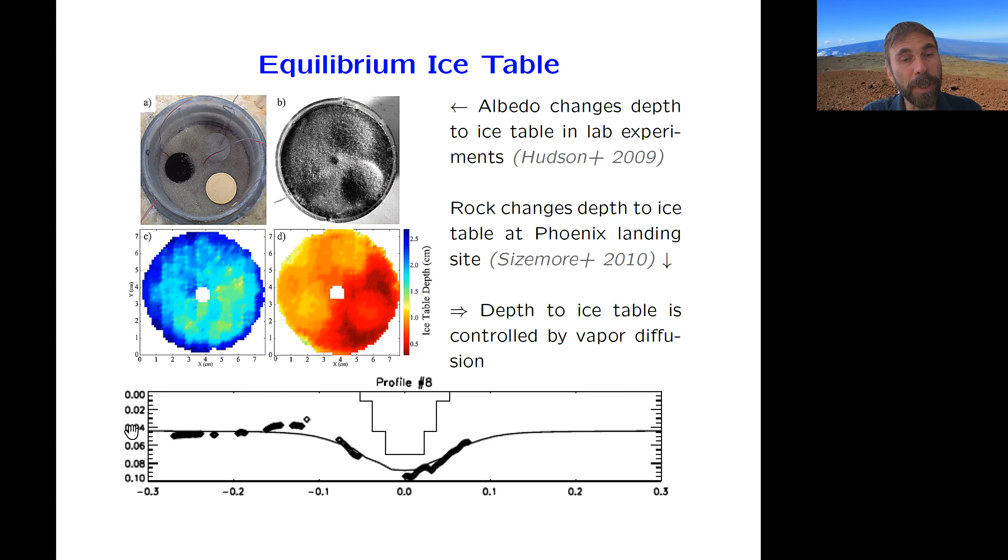And at the bottom here is a model calculation for the Phoenix landing site. So a DEM was constructed from the ice exposed by the lander, and diamonds are data, the measured depths. And in response to a rock, the ice table is predicted to deform so that the thin solid line is a model prediction. So this confirms that vapor diffusion indeed controls the depth to the ice table on Mars.